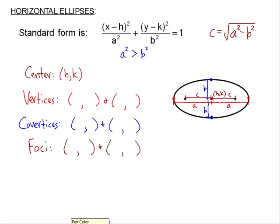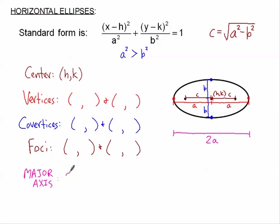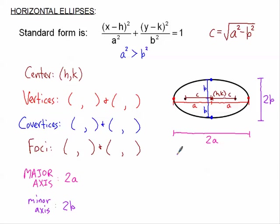The major axis is a length — since it was a units to each side, the whole major axis is 2a units long. The minor axis is 2b units, because it takes b units up and b units down. So to find all the key parts: find a, b, and c, then count those distances away from the center.